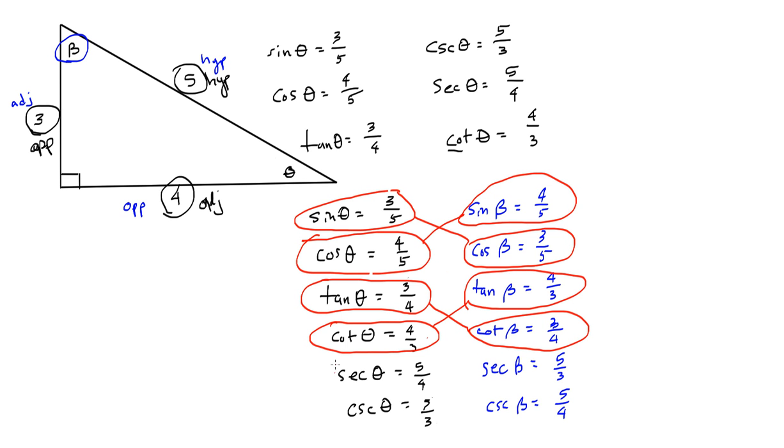the tangent of theta equals the cotangent of beta, and the cotangent of theta equals the tangent of beta. And then finally, the secant of theta equals the cosecant of beta, and the cosecant of theta equals the secant of beta.